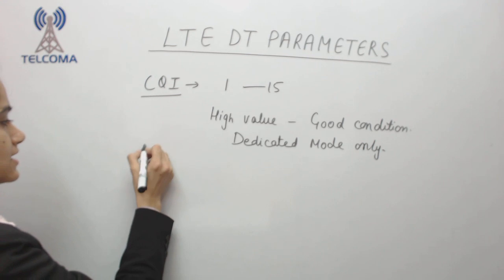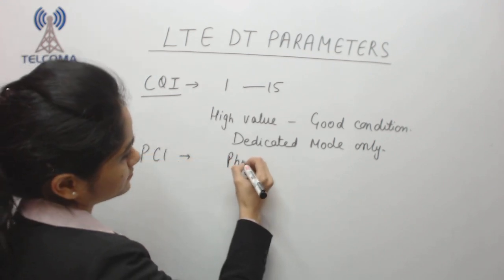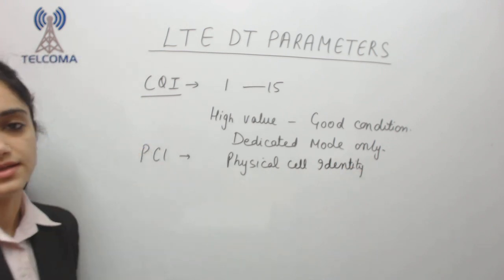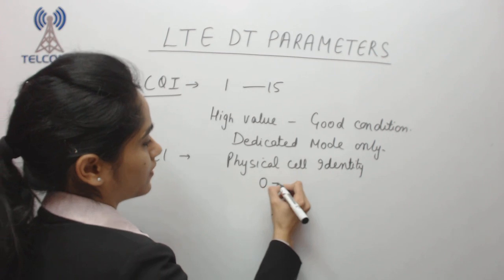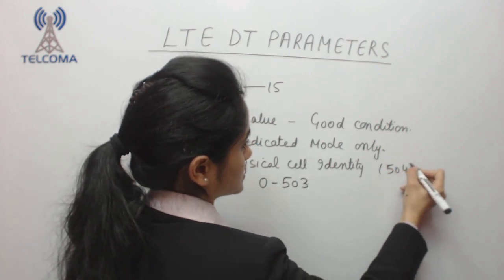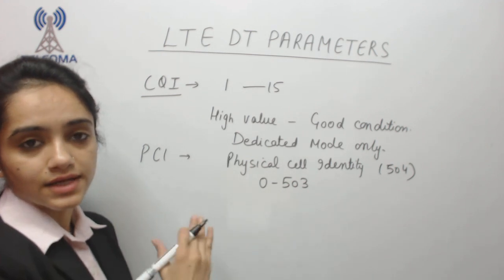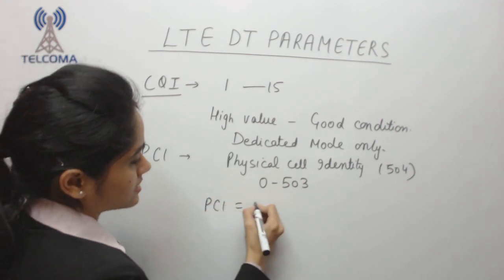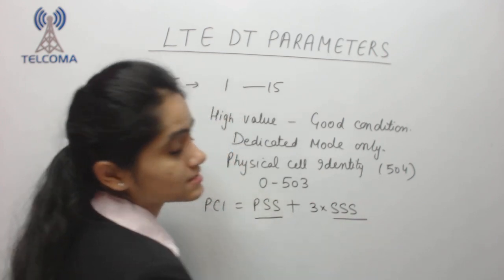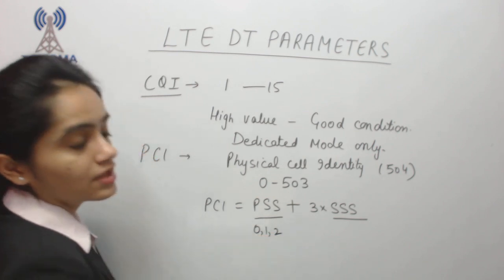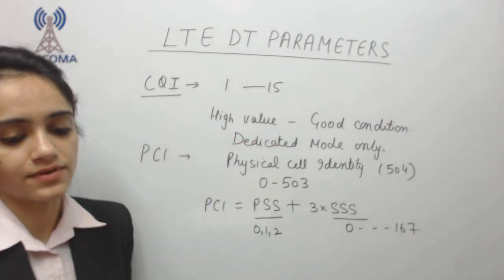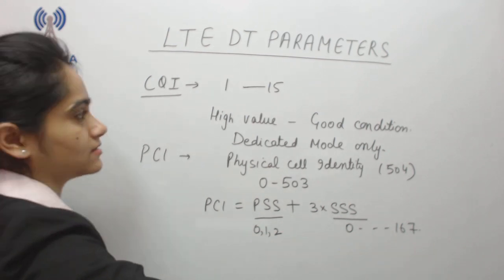Next we have PCI, which stands for Physical Cell Identity. PCI has a value from 0 to 503, giving a total of 504 PCIs available. PCI is calculated as PSS plus 3 multiplied by SSS, where PSS (Primary Synchronization Signal) has values 0, 1, and 2, and SSS (Secondary Synchronization Signal) has values from 0 to 167 — giving 168 SSS values.